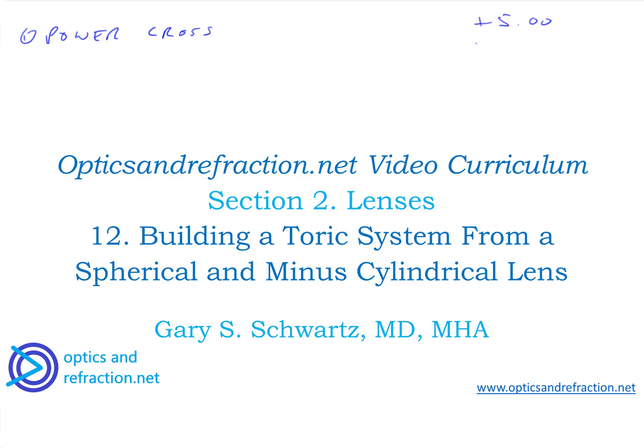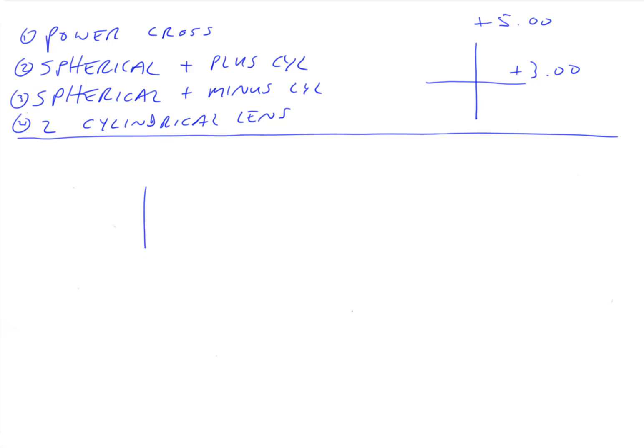Okay, so last talk we talked about how to make a toric system using a spherical lens and a plus cylindrical lens, like a plus two axis 180. So today we're going to do the same basic concept but instead of having a plus cylindrical lens, we're going to use a minus cylindrical lens.